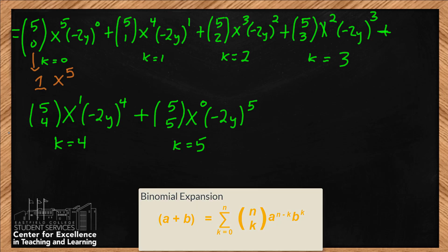For k=1: 5 choose 1 is just 5, we have x to the 4th, and times negative 2y. That's the next term. For k=2: 5 choose 2 is 10. We have x cubed, and then negative 2y squared — negative 2 squared is 4, so times 4y squared. I want to eventually combine the 10 and the 4 to get 40.